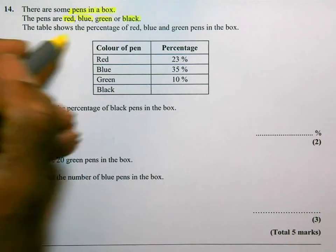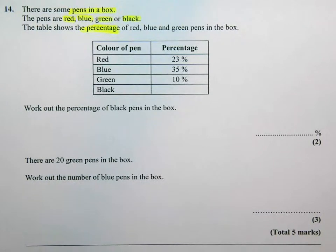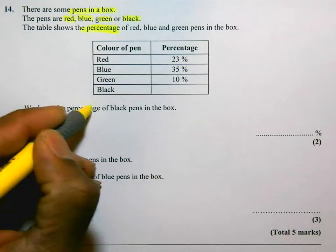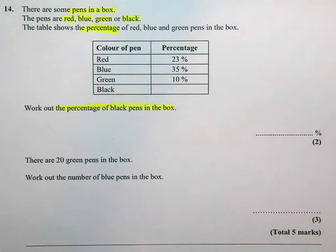The table shows the percentage of these different colors: red, blue, green pens in the box. The black one is empty. Work out the percentage of black pens in the box. Now, remember,